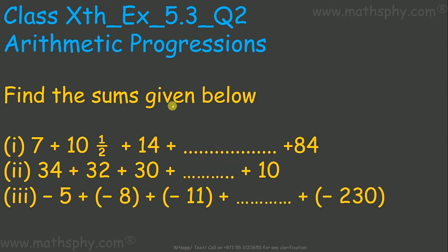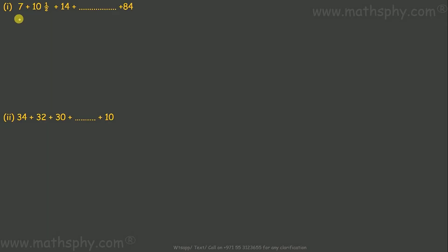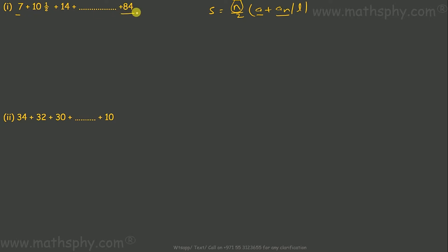This question says find the sums given below. We have three series here and we have to find the sum for all of them. The first starts from 7 and goes up to 84. To find the sum, we need: S = n/2 × (a + last term). We have 'a' and the last term, but we do not have 'n' — how many terms are in the list. So we need a = 7 and d = 10.